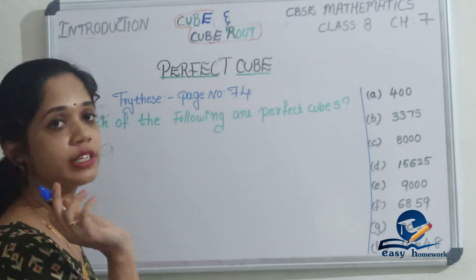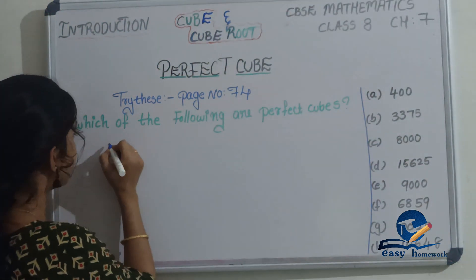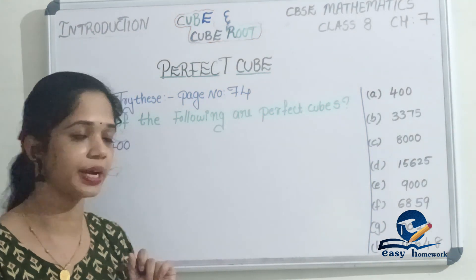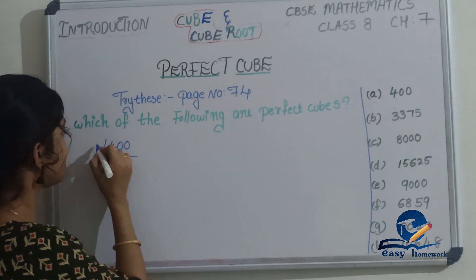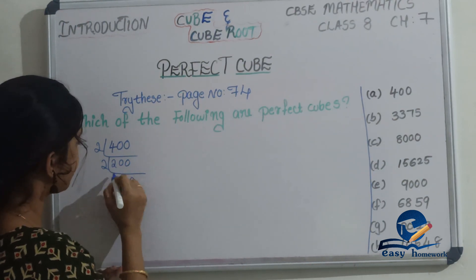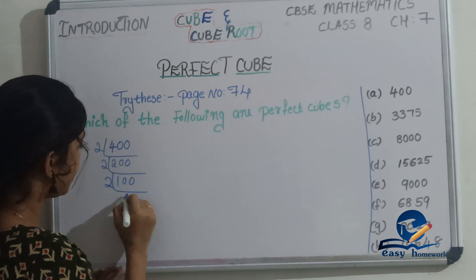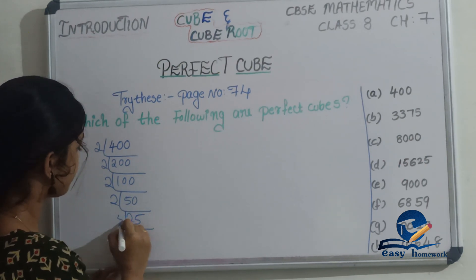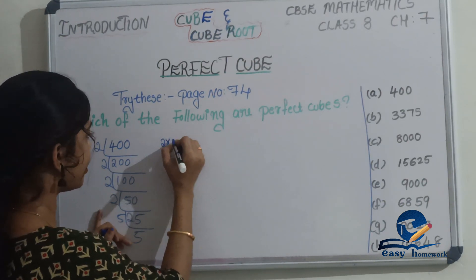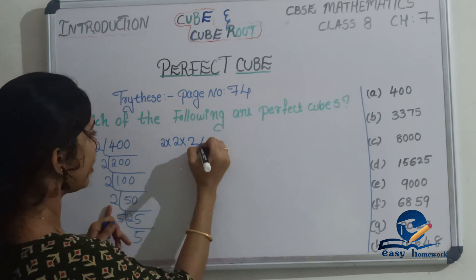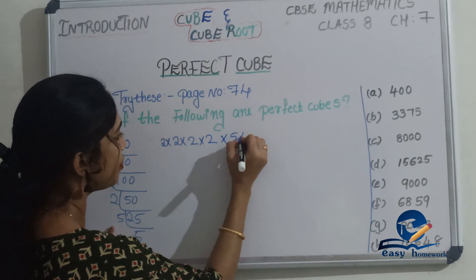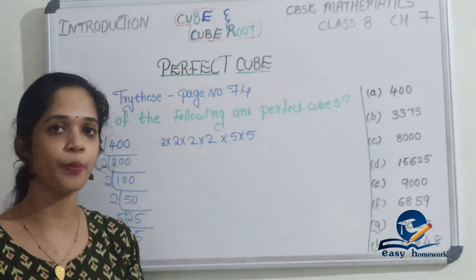The first number is 400. We divide: 200, 150 — wait, let's do the prime factorization. 400 = 2 × 2 × 2 × 2 × 5 × 5. Okay, so let's check this number.